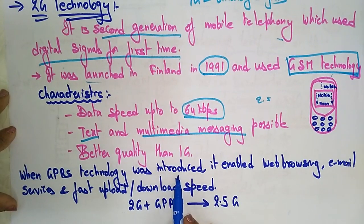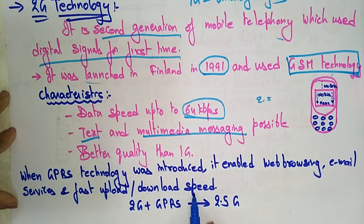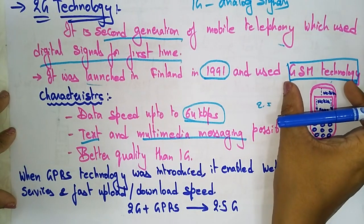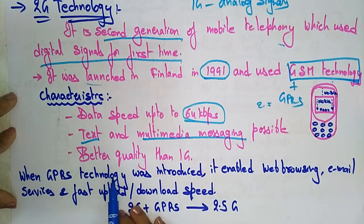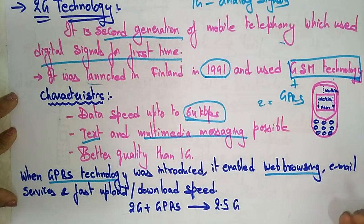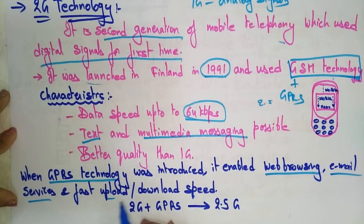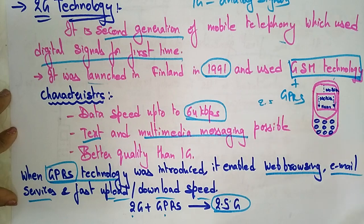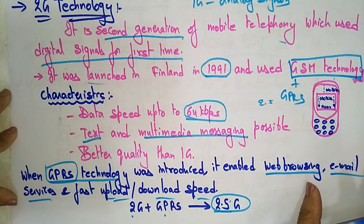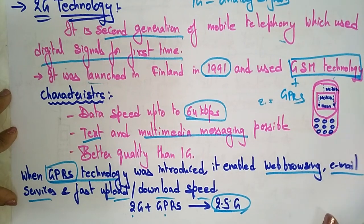When GPRS technology was introduced alongside 2G, it enabled web browsing, email services, and faster upload and download speeds. The 2G technology advanced by adding GPRS technology is called 2.5G — the 2.5 generation technology. So 2G along with GPRS enabling web browsing, email services, and faster uploads and downloads is referred to as 2.5 generation technology.